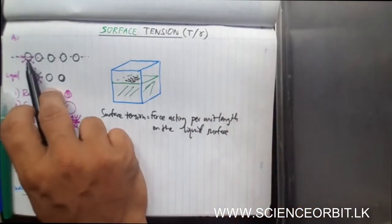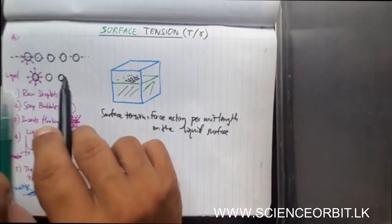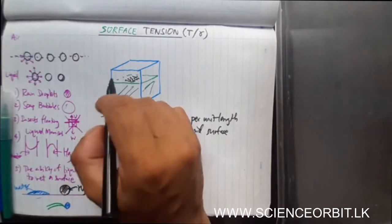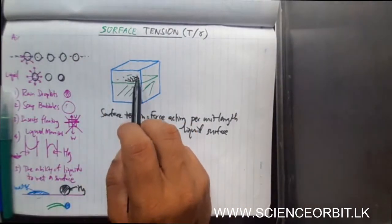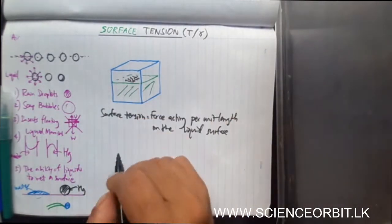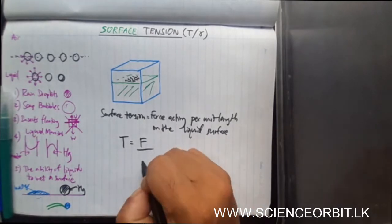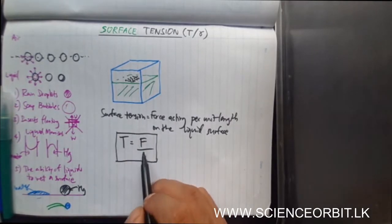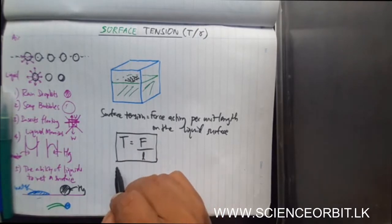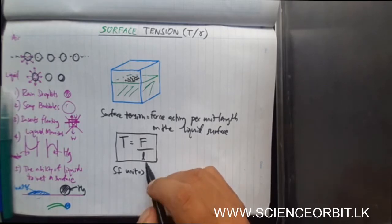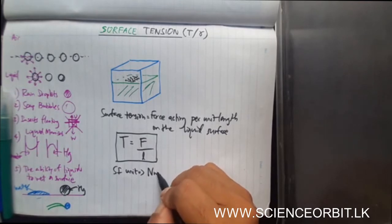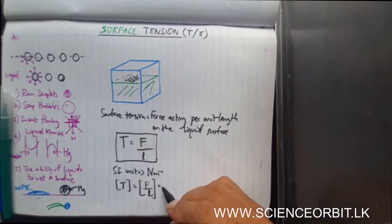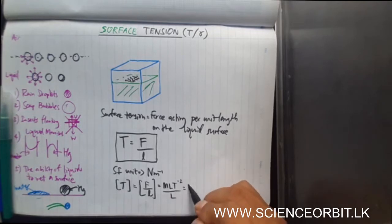The force acts on the surface in a horizontal direction, and because of that force, a membrane-like formation is created on the liquid surface. The definition for surface tension is that force acting per unit length. So T equals force divided by length. The SI unit is Newton per meter, and the dimensions are MLT⁻² divided by L, which gives MT⁻².